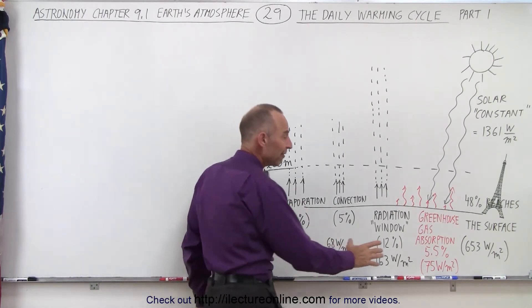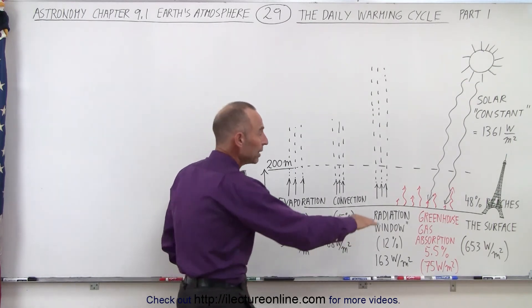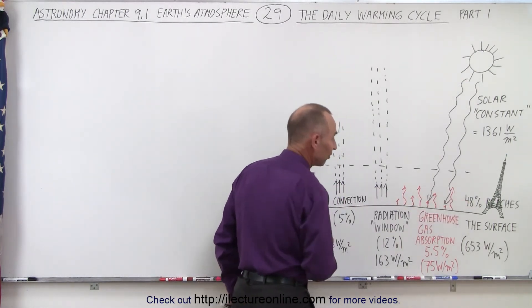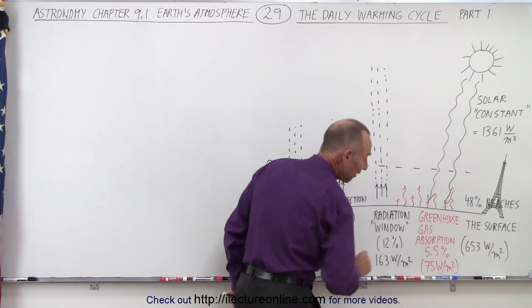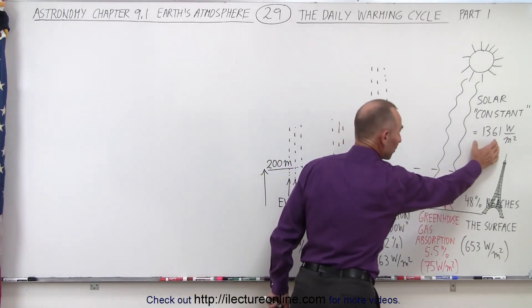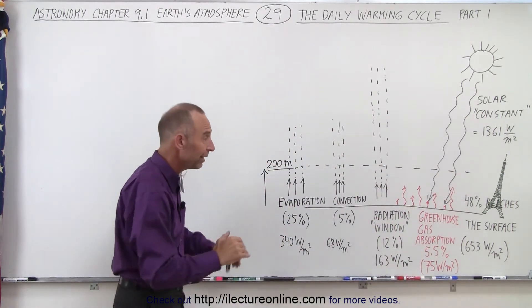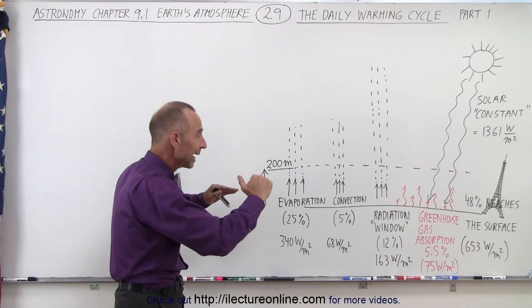The remaining 5.5% or so, somewhere between 5% to 6%, gets absorbed by the greenhouse gases in the atmosphere. That's about 75 watts per square meter out of the 1,361 watts per square meter that reaches the Earth. About 75 watts per square meter, 5.5%, is actually absorbed by the atmosphere.